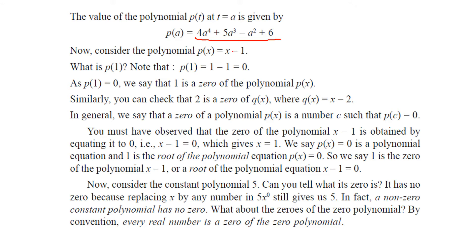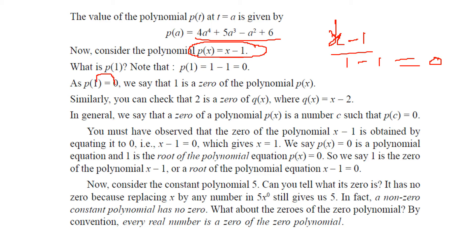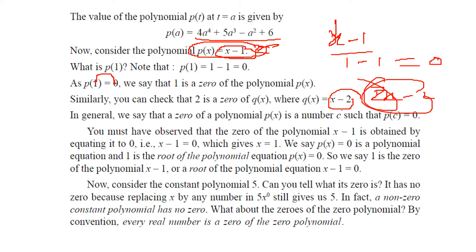So p(x) equal to x minus 1. As I said, the zero of this: if I put x equal to 1, then 1 minus 1 will be 0. So the zero of this algebraic expression — we can say a monomial — is 0. So p(1) equal to 0. Any number which makes this expression 0 is called the zero of that polynomial. So in this case, 1 is the zero. If I write x minus 2, I put 2, and 2 minus 2 is 0. So 2 is the zero of that polynomial.